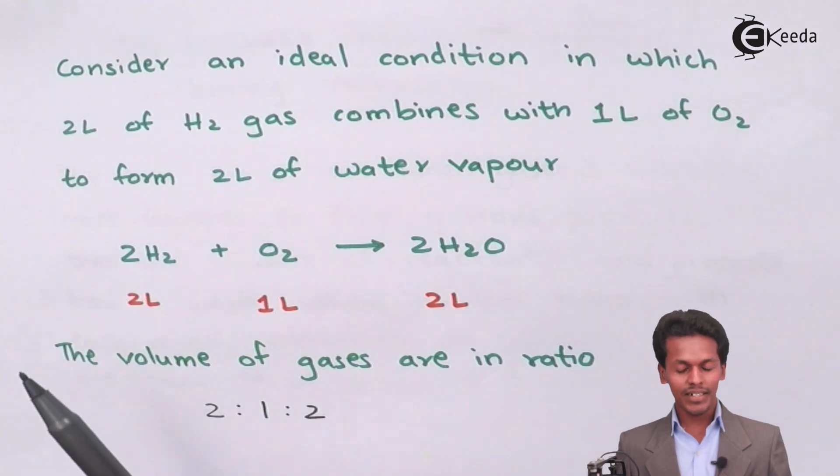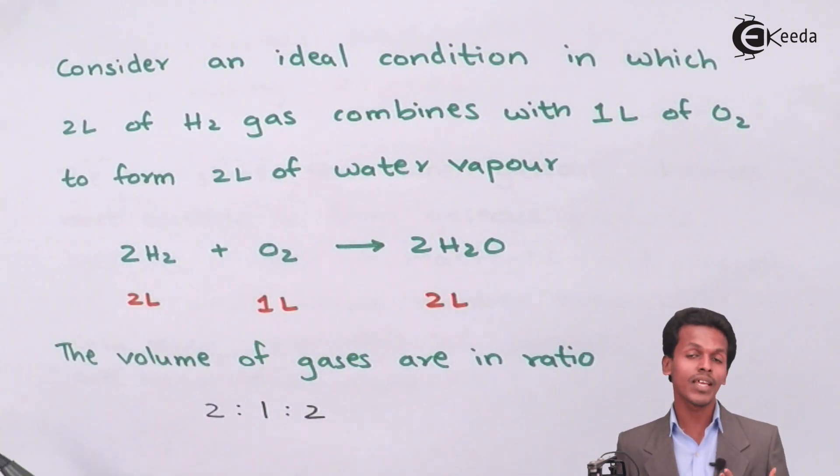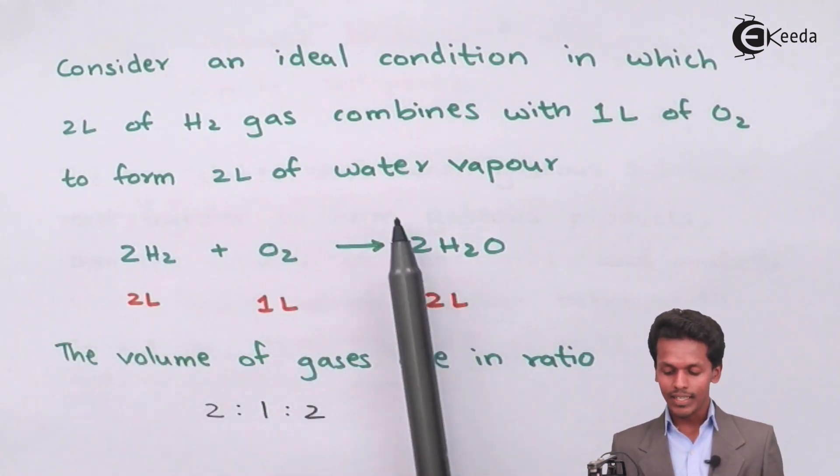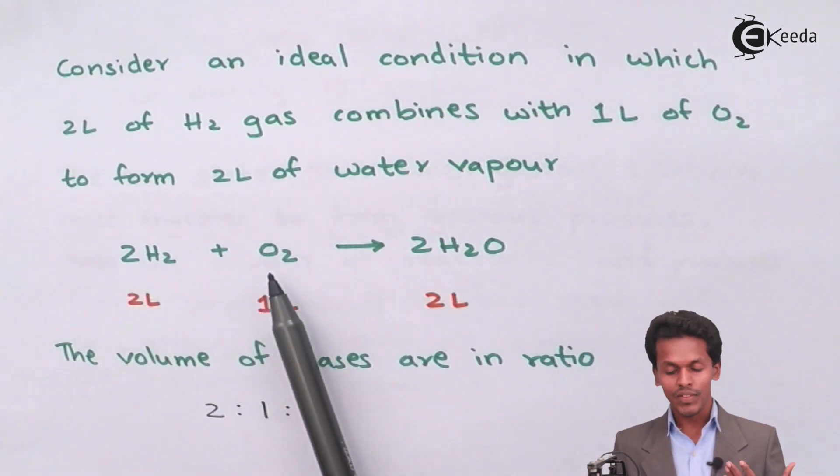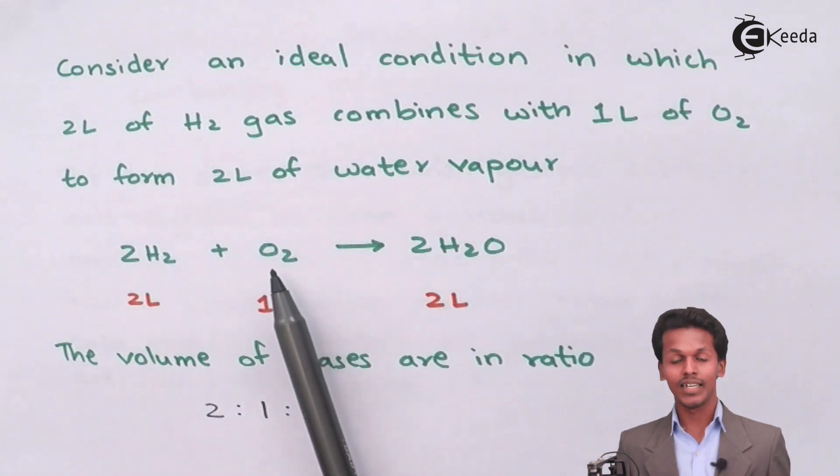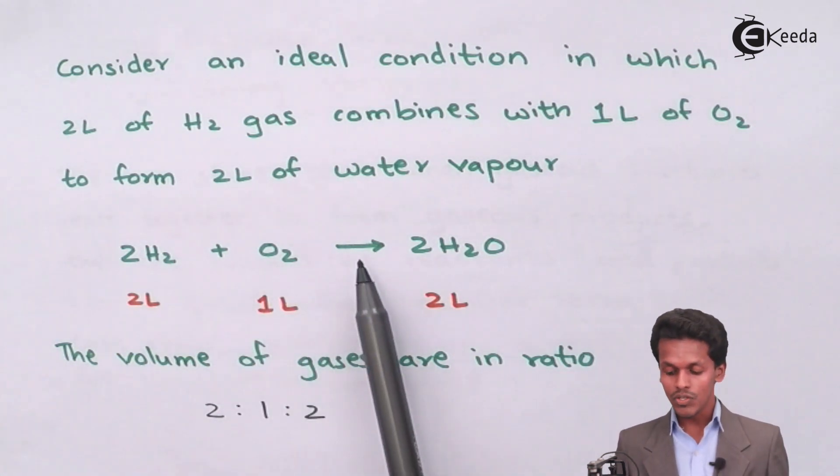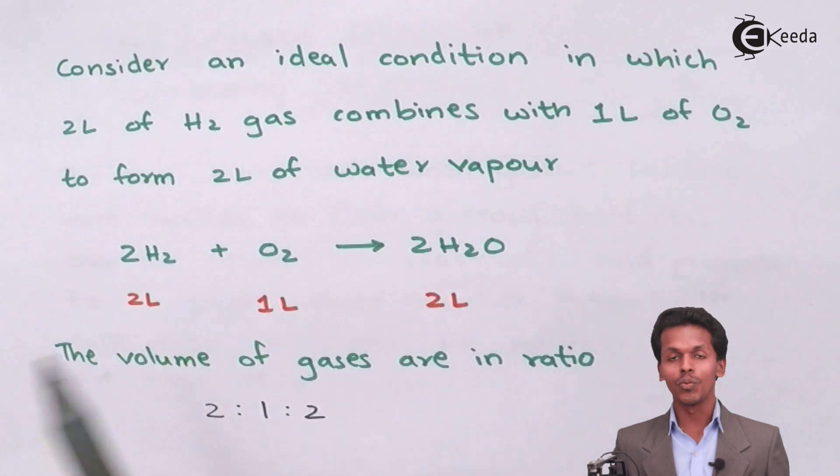The reaction can be written this way: 2 moles of H2 combines with 1 mole of oxygen molecule (not atom, but molecule) to give 2 moles of H2O molecules. The equation is 2H2 + O2 → 2H2O.